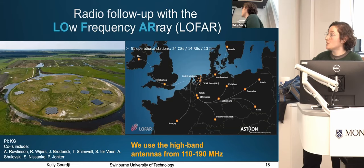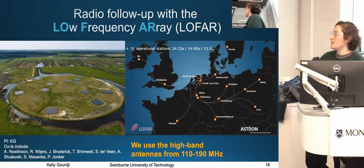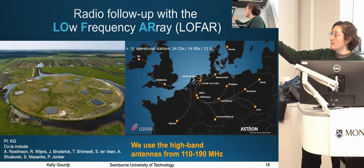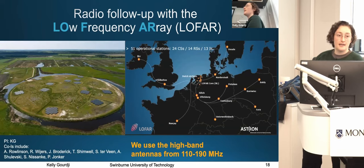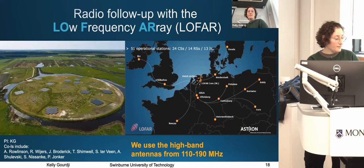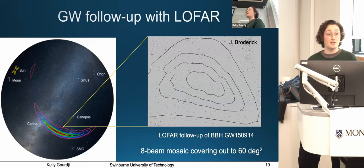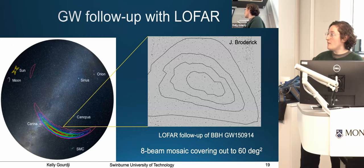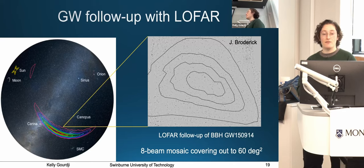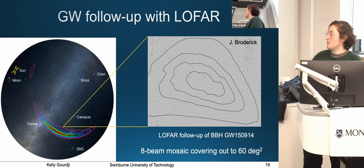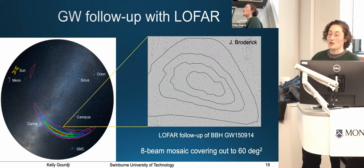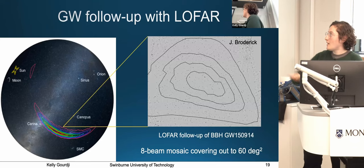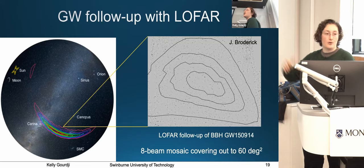LOFAR is a radio interferometer headquartered in the Netherlands, though it has longer baselines through stations throughout Europe. For this work we use the Dutch stations and the high band antennae, so our observations are centered at about 150 MHz. LOFAR has been following up on gravitational wave events since the first observing run. This is an example LOFAR mosaic created using eight simultaneous LOFAR beams covering the field of the first binary black hole detection — doing a pretty good job of covering a large fraction of its localization area, to about 60 square degrees.